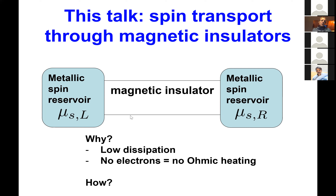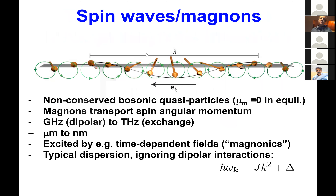Secondly, there are no moving electrons in whatever is transporting the spin here, so there's no conventional ohmic heating in the magnetic system. Now I'll go step by step through how to do this experimentally. Spin will be transported through the magnetic insulator by spin waves, or if you quantize them, magnons — most of you will have heard about them, so this is just a reminder.